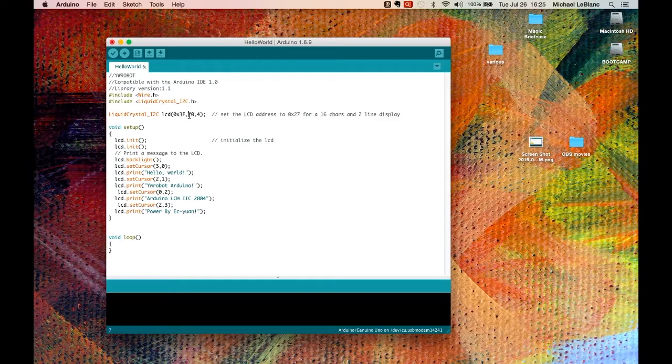And then the device that we have is a sixteen character not twenty but sixteen and it's two lines. And then we will adjust the set cursor commands.